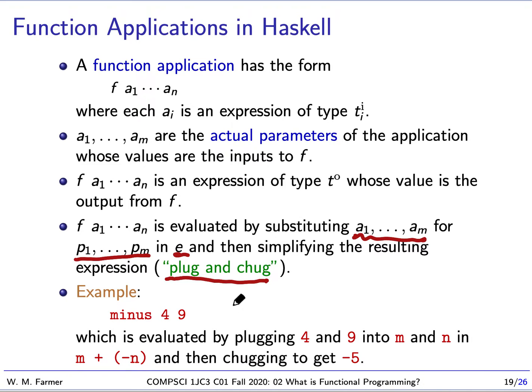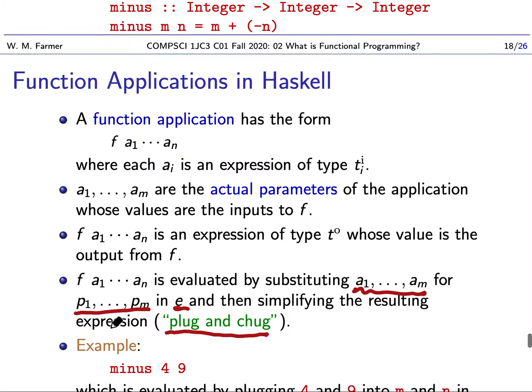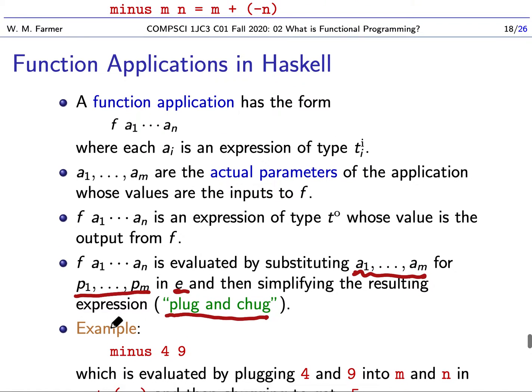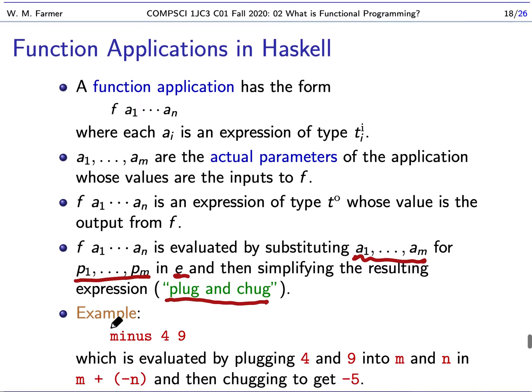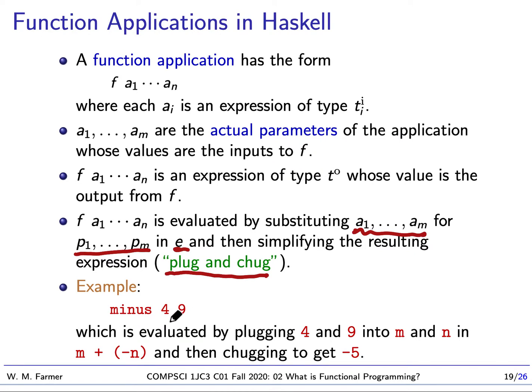Here's an example of minus applied to 4 and 9. We replace m with 4 and n with 9 in the expression. When we replace that, we're going to have something that looks like 4 plus minus 9. And chug means we simplify and get minus 5. That's basically how a function application is evaluated.